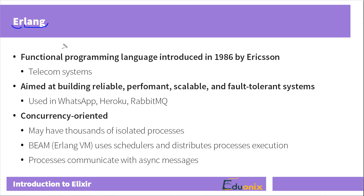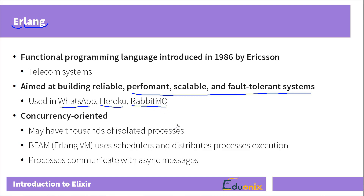The idea of Erlang revolves around the concept of high availability — about being performant and scalable. This language is used by many popular companies; for example it's used by Heroku, which is a cloud service provider. Also it's used in WhatsApp messaging application, and RabbitMQ, a queue service, is also built with Erlang. So as you see, it doesn't mean that Erlang can only be used to build telecom systems — it's a general purpose language used quite extensively these days.